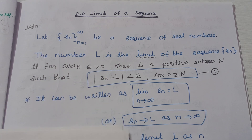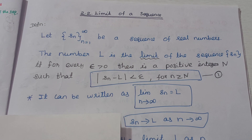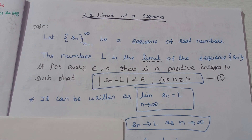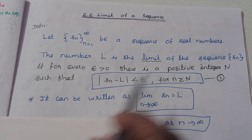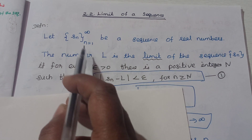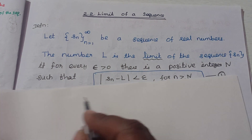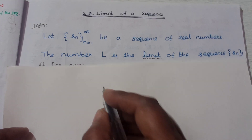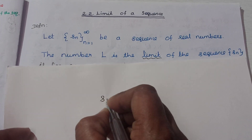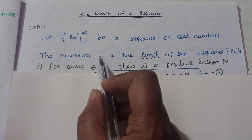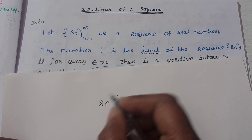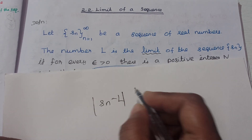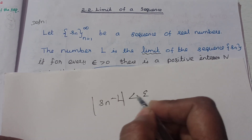The epsilon is very small — however small. So epsilon is a real number. There is a positive integer N such that s_n is the nth term of the sequence. The number l is the limit, and the difference — that is, |s_n - l| — is always less than epsilon.